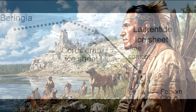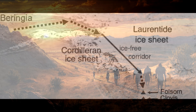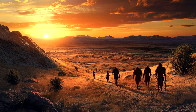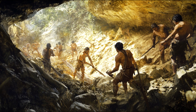Old theories and new questions. The dominant Clovis First model, which held that the Clovis culture represented the earliest inhabitants of the Americas around 13,000 years ago, has been increasingly challenged. Discoveries at sites like Monte Verde in Chile, dated to about 14,500 years ago, and the Buttermilk Creek Complex in Texas, estimated at around 15,500 years ago, indicate that humans arrived much earlier. Excavations at Mexico's Chiquihuit Cave suggest human presence dating back 30,000 years, a revelation that radically shifts the migration timeline.